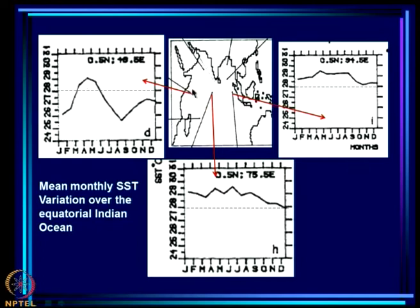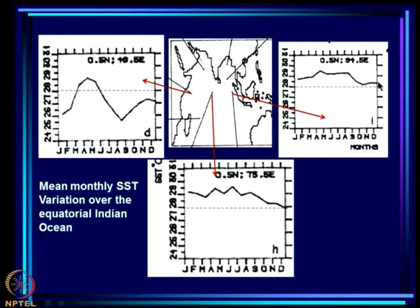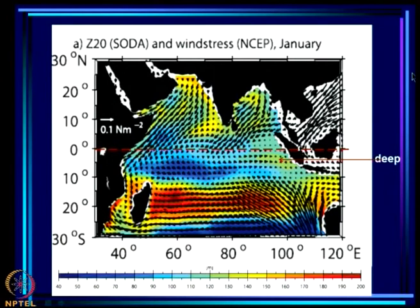In the central equatorial region, SST stays above the threshold and starts decreasing only after September. In the eastern part near Sumatra, SST is above 28°C throughout the year but is somewhat colder in October–November–December. Now, regarding the thermocline: just as for El Niño in the Pacific the thermocline was shallow in the east and deep in the west, here the opposite holds — the thermocline is shallower in the west and deeper in the east.